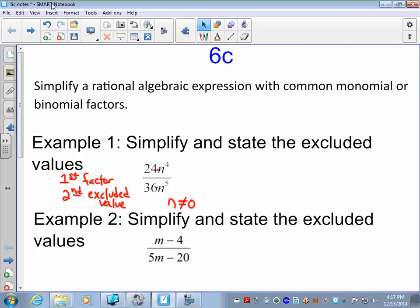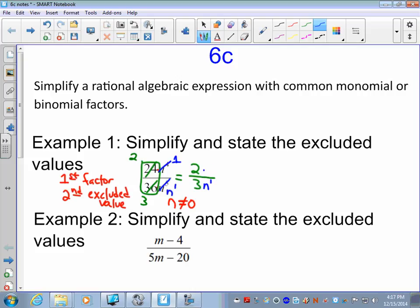Now we proceed with simplifying. If you have 24, 36, that will reduce to divide top by 12, divide the denominator by 12, you get 2 thirds. n to the 4th, divide by n to the 5th. Divide top and bottom by n to the 4th, you get 1. Divide bottom by n to the 4th, you get n to the 1st. And 2 times 1 is 2, 3 times n to the 1st is just 3n. So we say our simplified answer is 2 divided by 3n with the excluded value of n cannot equal 0.